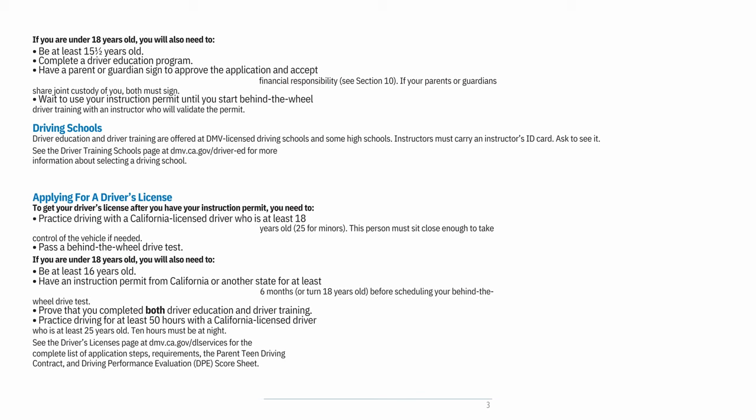To get your driver's license after you have your instruction permit, you need to: practice driving with a California licensed driver who is at least 18 years old (25 for minors) — this person must sit close enough to take control of the vehicle if needed — and pass a behind-the-wheel drive test.